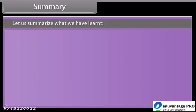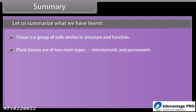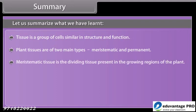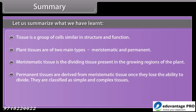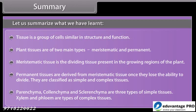Summary: Tissue is a group of cells similar in structure and function. Plant tissues are of two main types: meristematic and permanent. Meristematic tissue is the dividing tissue present in the growing regions of the plant. Permanent tissues are derived from meristematic tissue; once they lose the ability to divide, they are classified as simple and complex tissues. Parenchyma, colenchyma, and sclerenchyma are three types of simple tissues. Xylem and phloem are types of complex tissues.